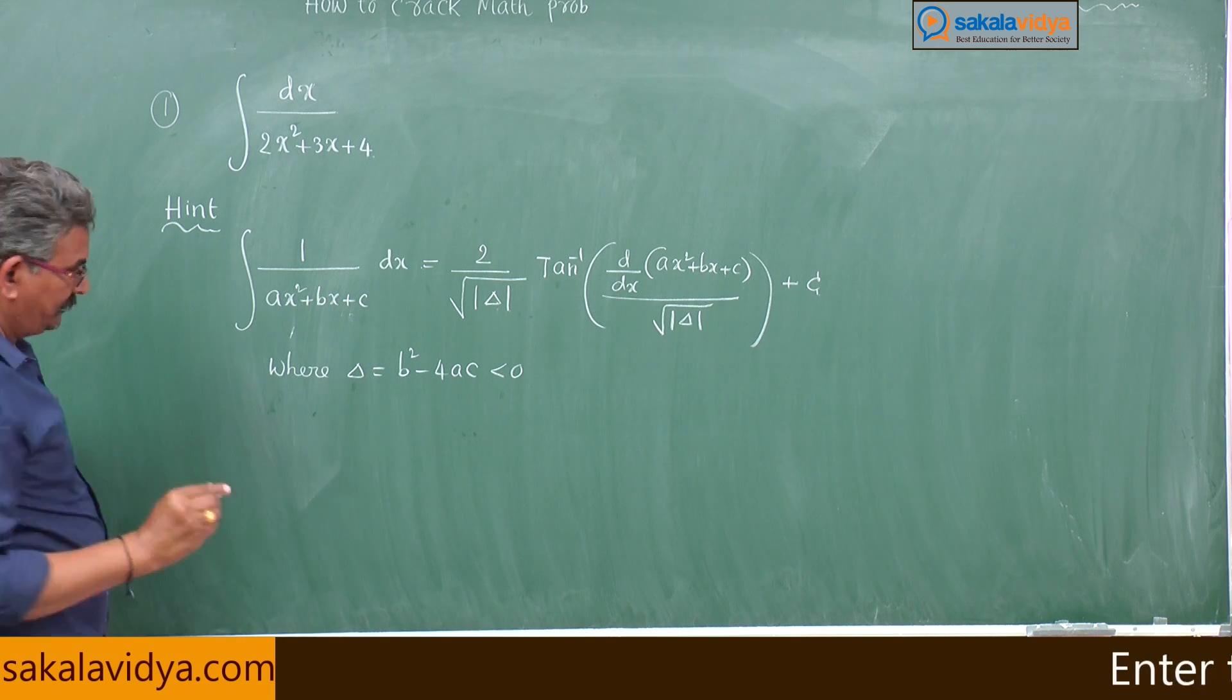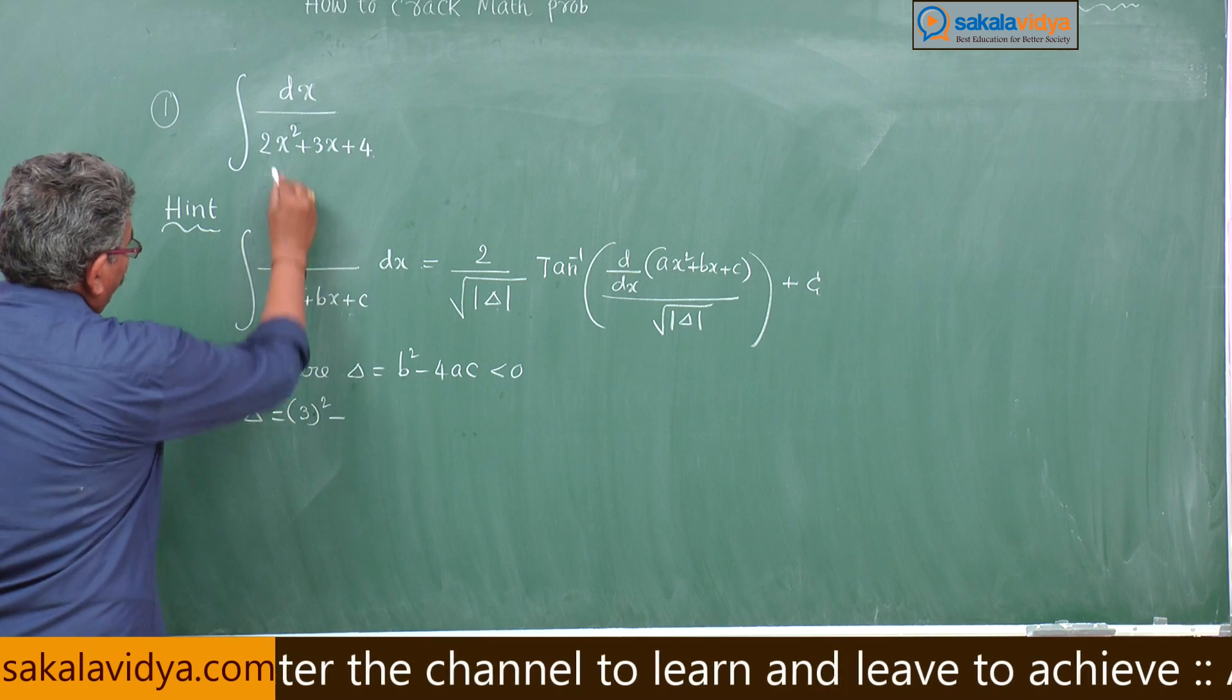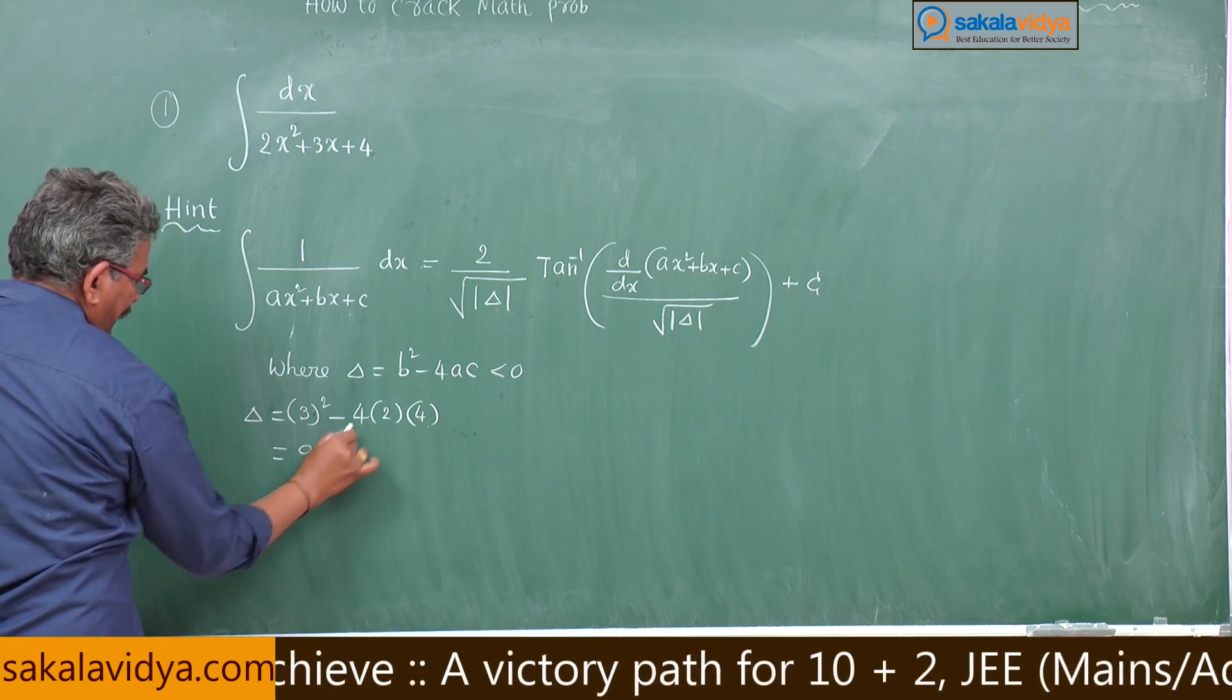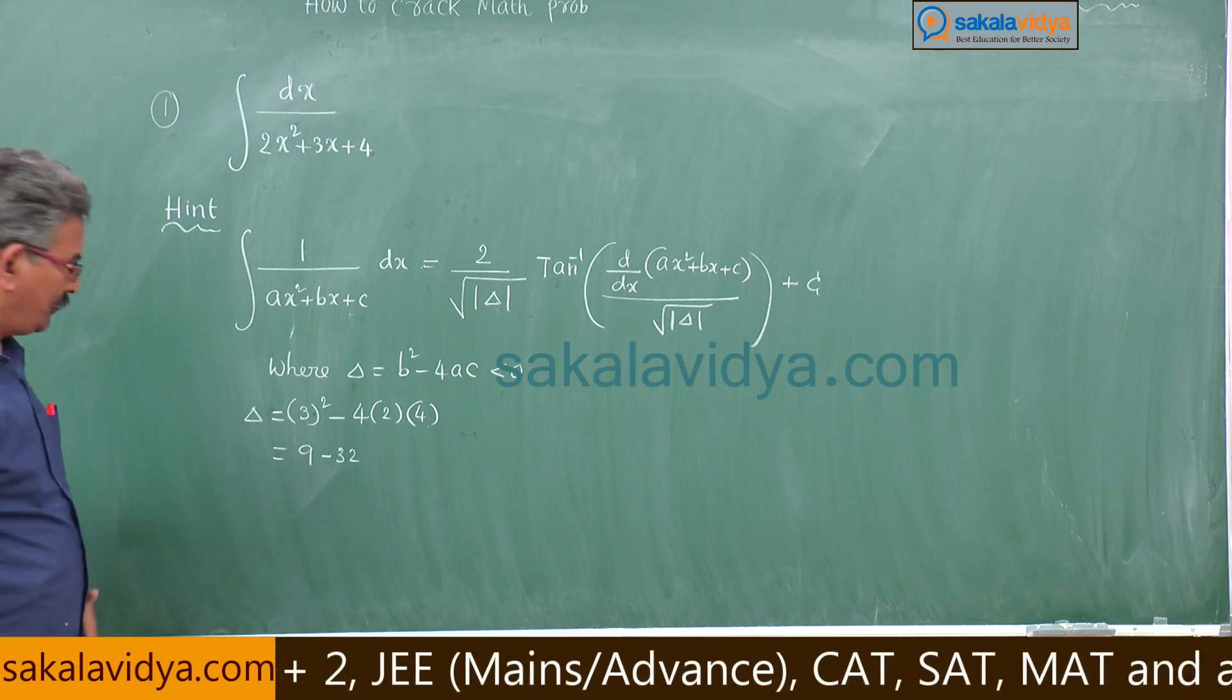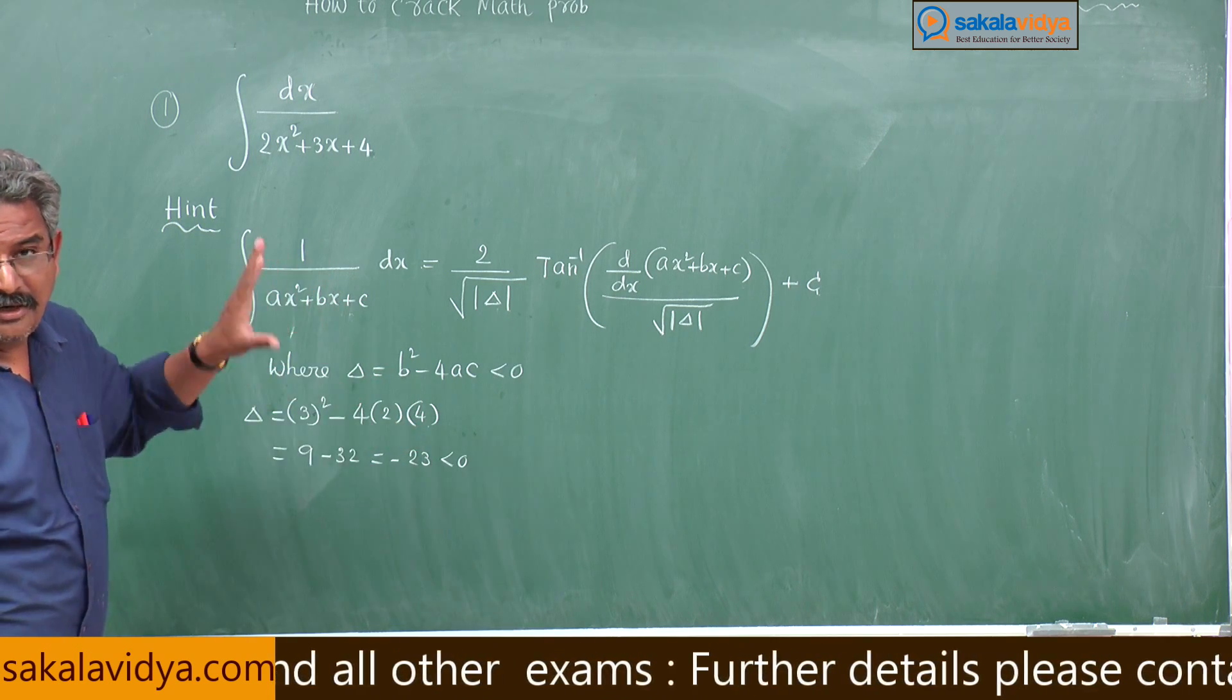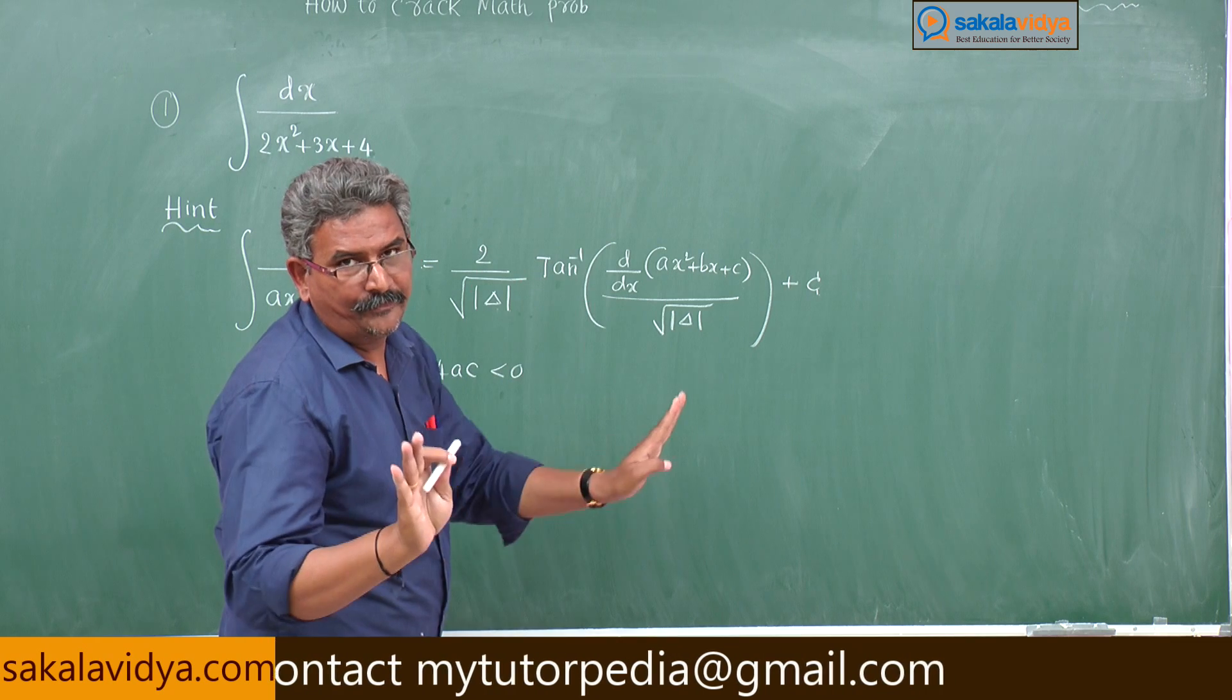Let us find out first delta value. Delta = b² - 4ac = 3² - 4×2×4 = 9 - 32 = -23. Minus 23 is very clear less than 0. This is very important. Unless and until delta is less than 0, then only we can apply this shortcut, otherwise this formula or shortcut will not hold good.